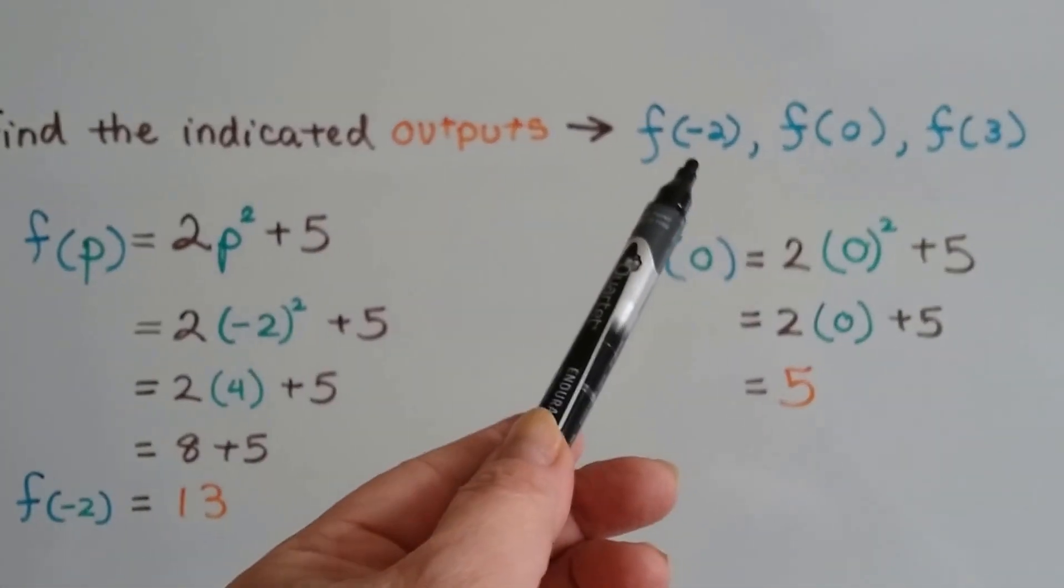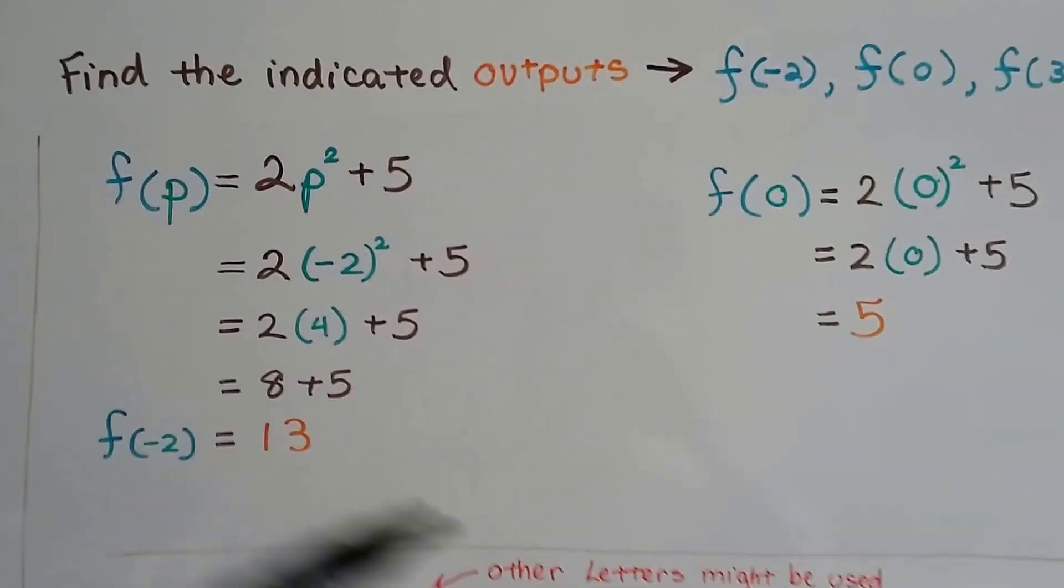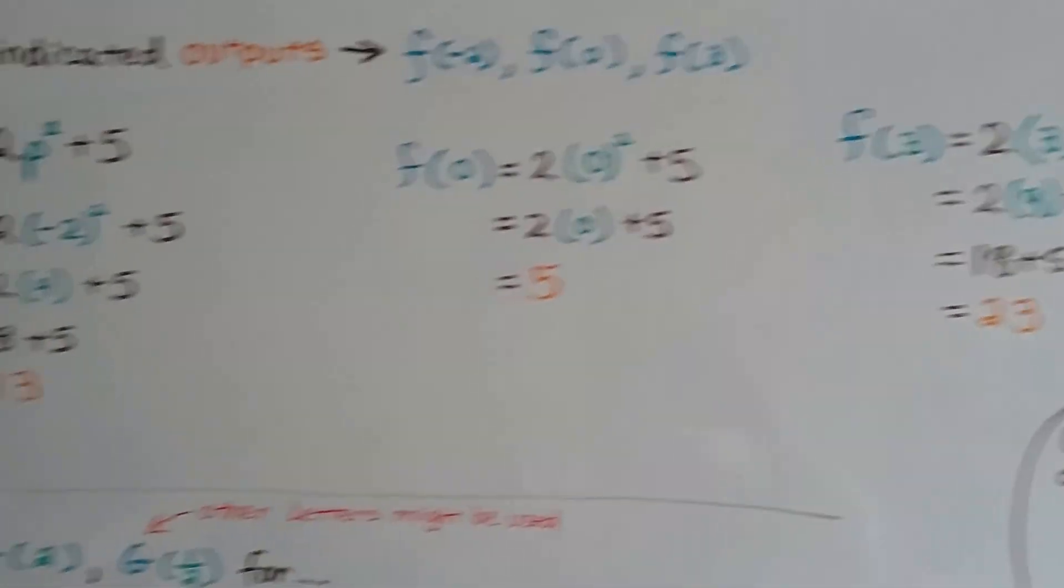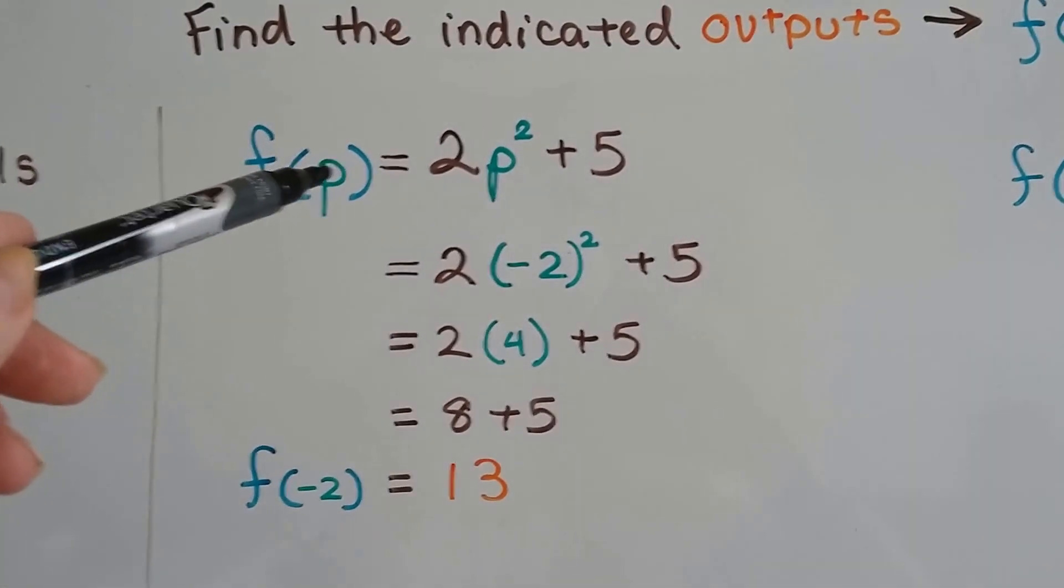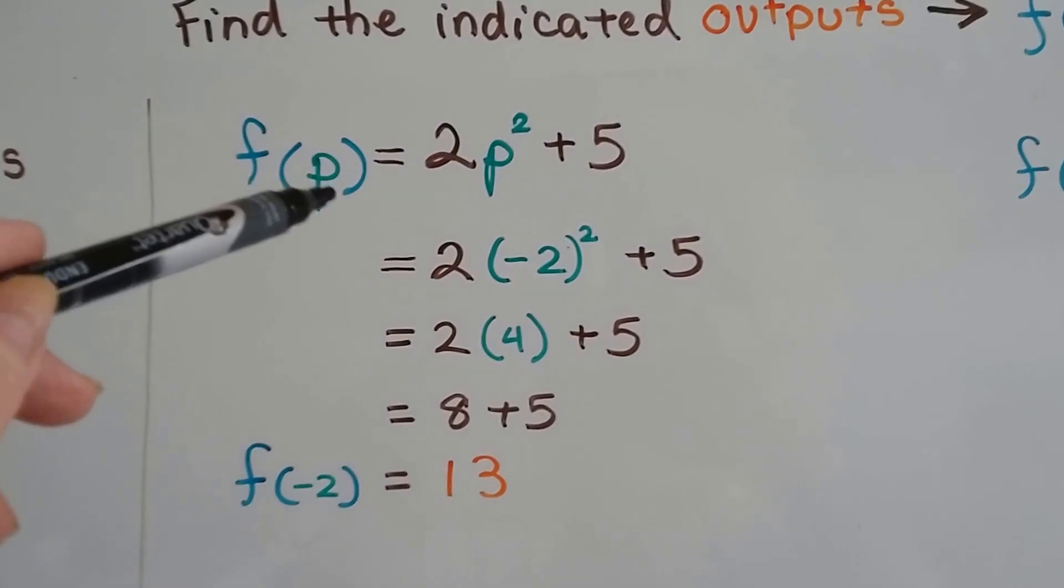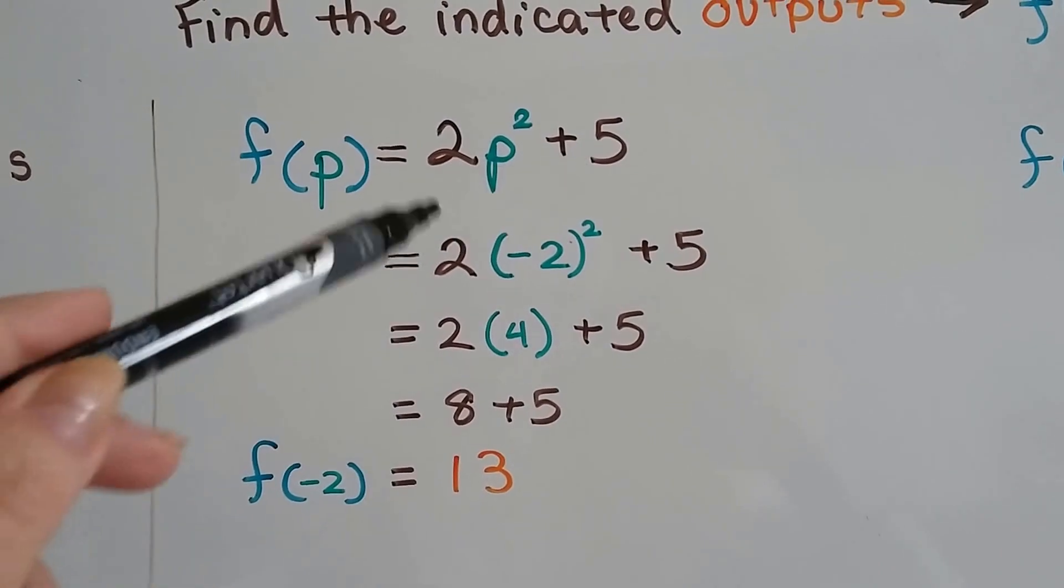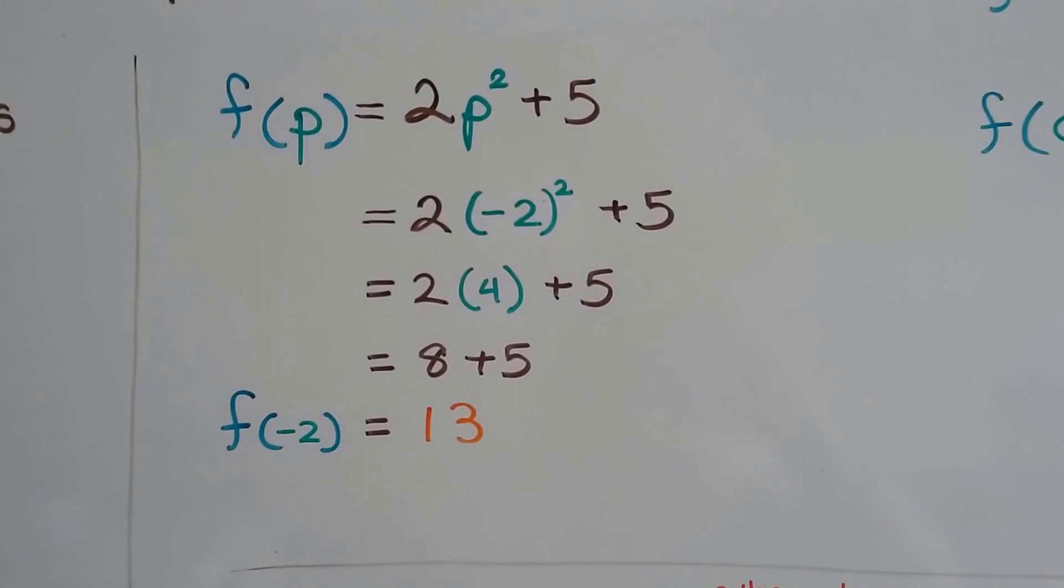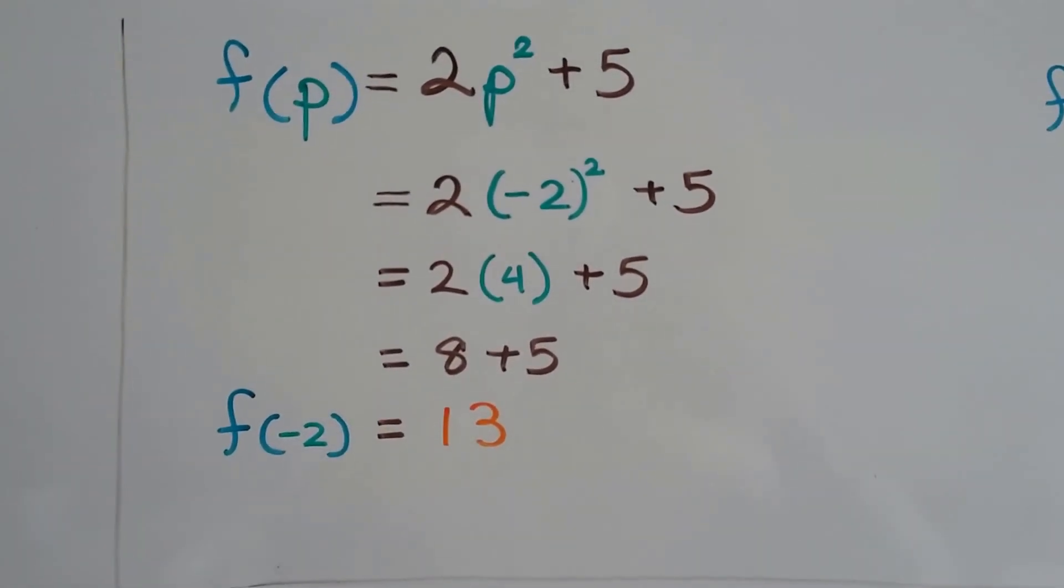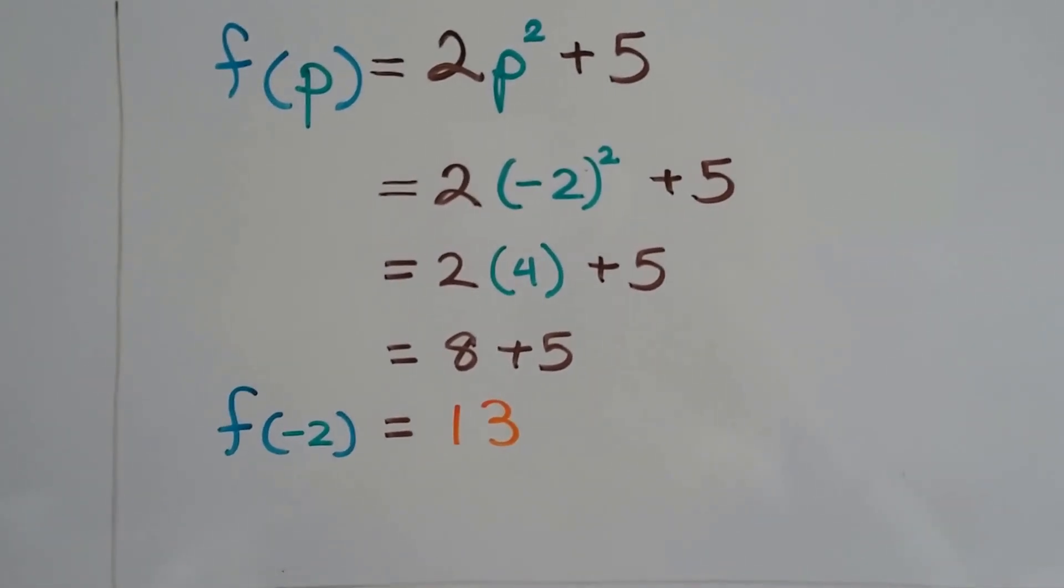So we can find the indicated outputs. So if these are our values for x, negative 2, 0, and 3. So here's the negative 2. So now it doesn't have an x here, it's got a p, which is okay. And we do 2p² + 5, we just plug in that negative 2 where the p is. Negative 2 times negative 2 is a positive 4. Now we have 2 times 4, which is 8. 8 plus 5 is 13, so our function value is 13.